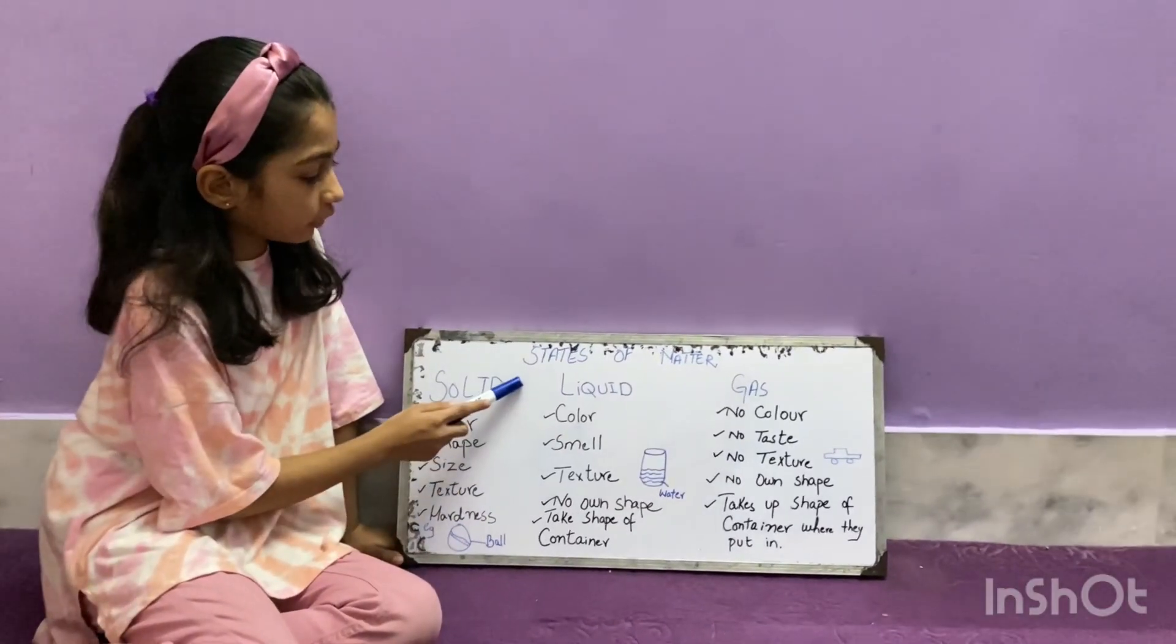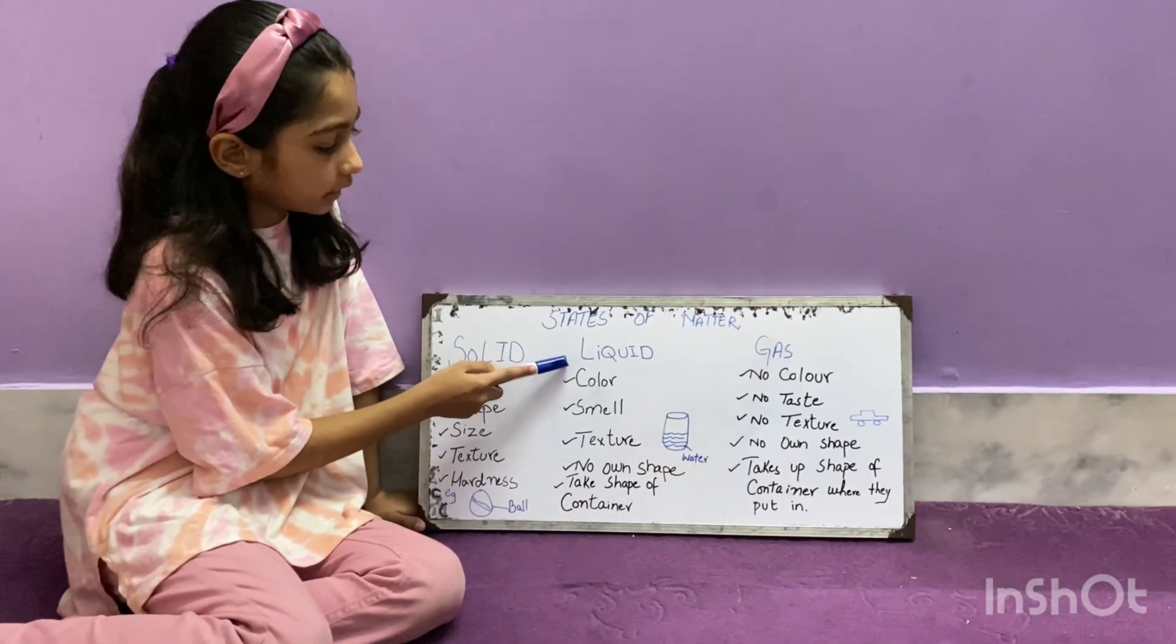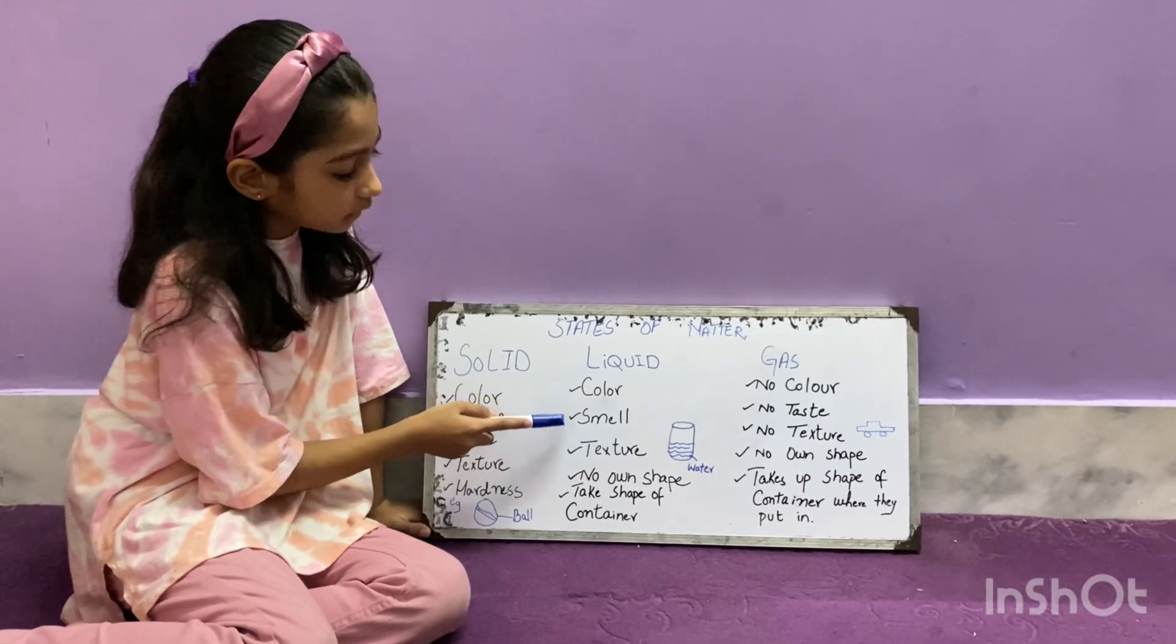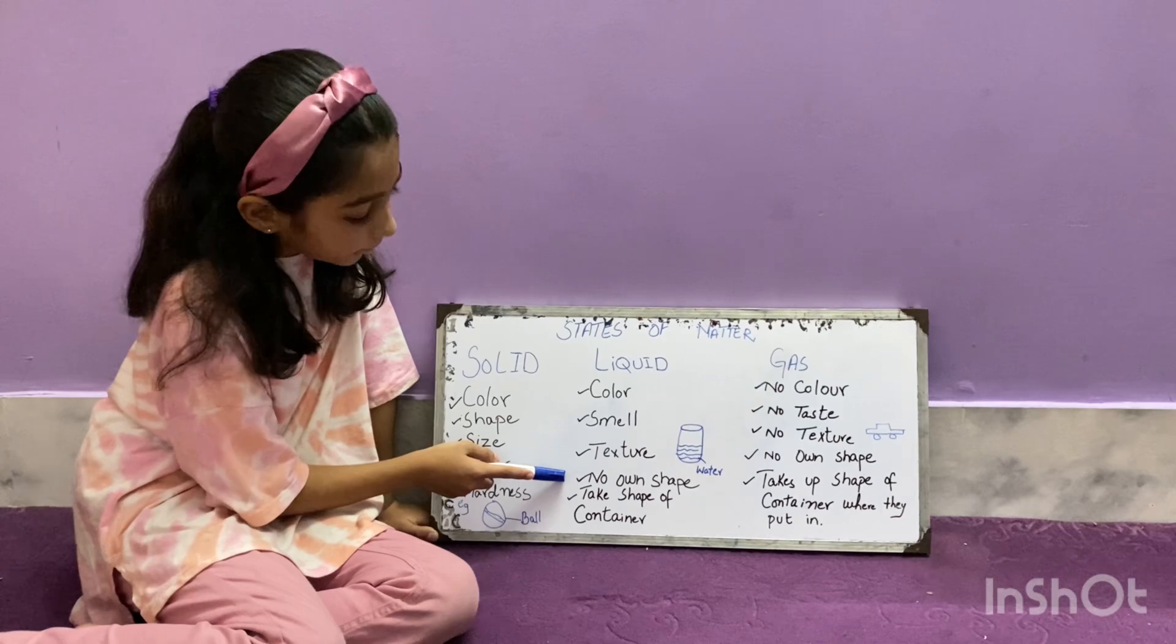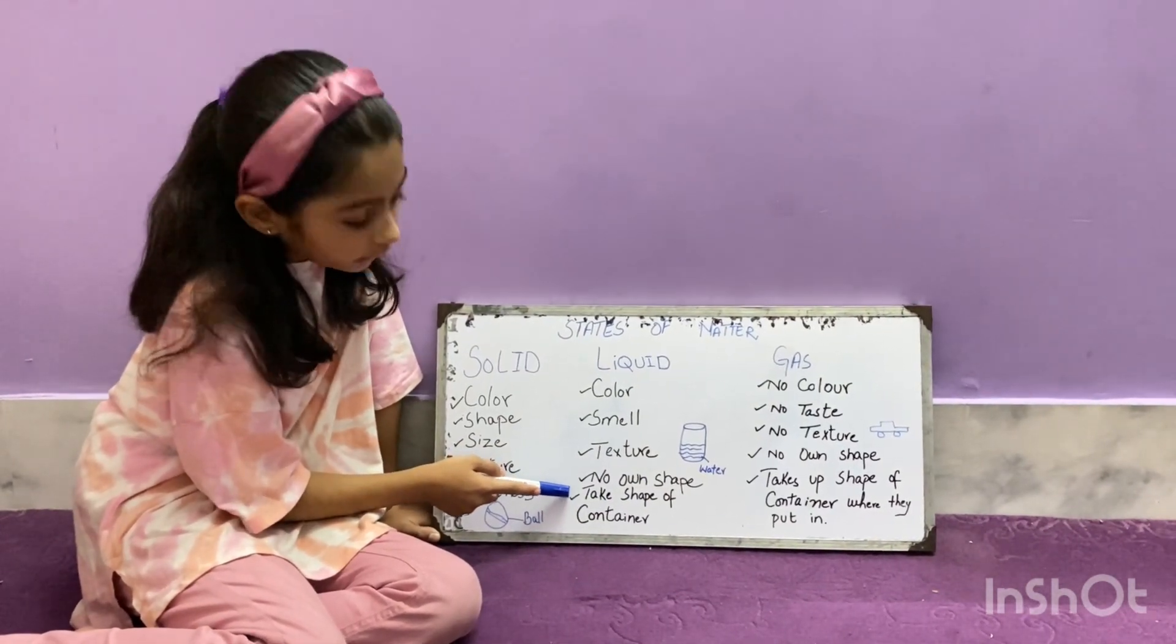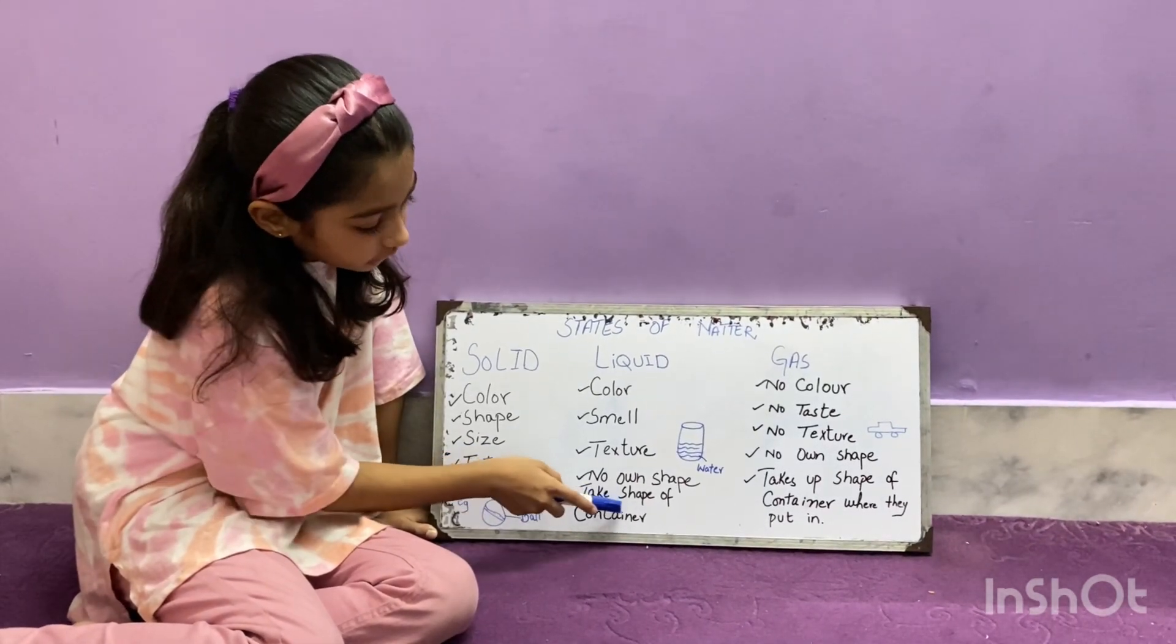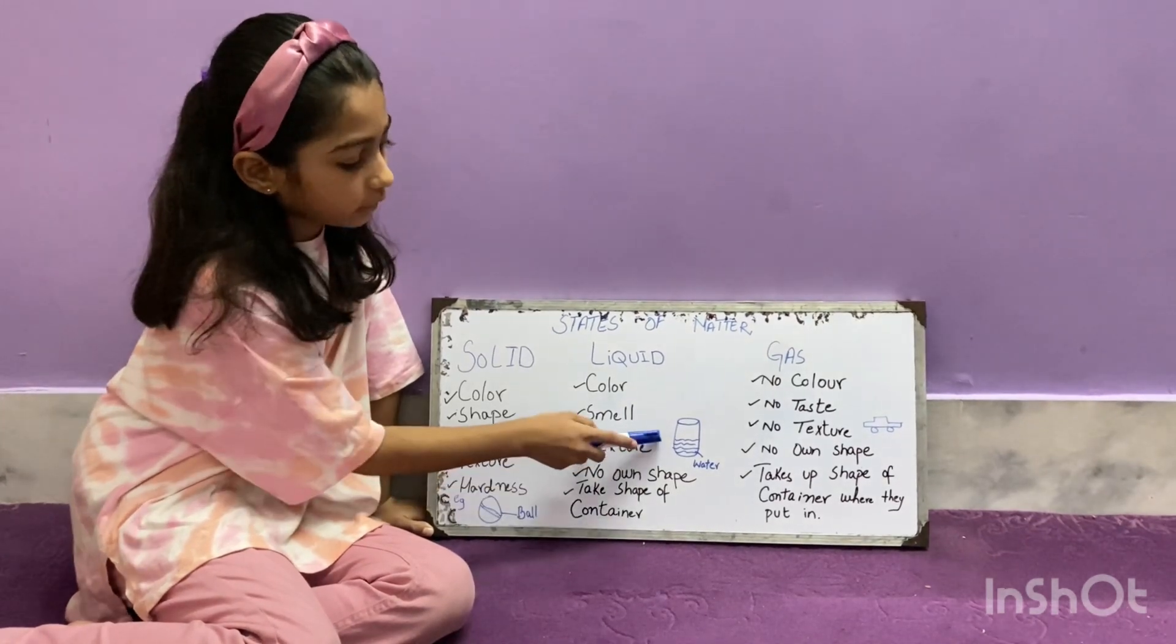Second state of matter: liquid. Liquid has its own color, smell, and texture but no own shape. And it takes shape of container. For example, water.